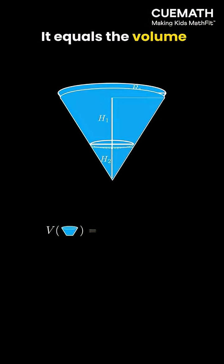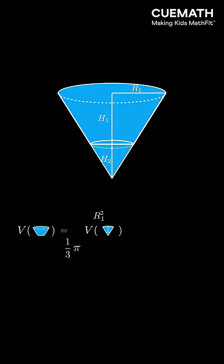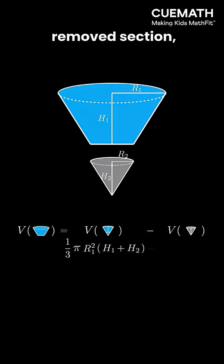It equals the volume of the full cone minus volume of the removed section.